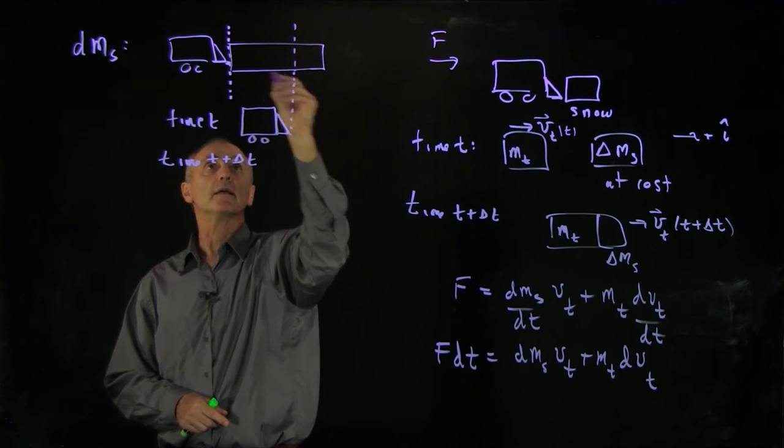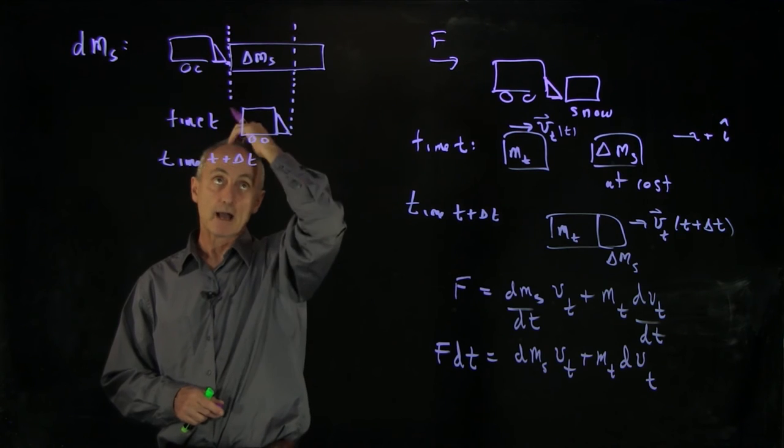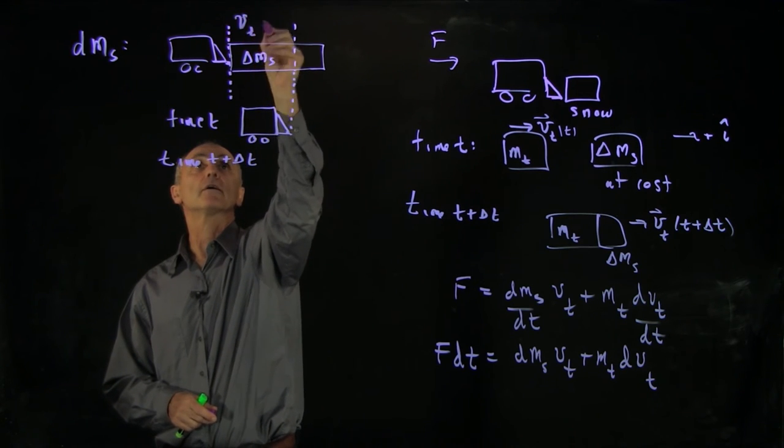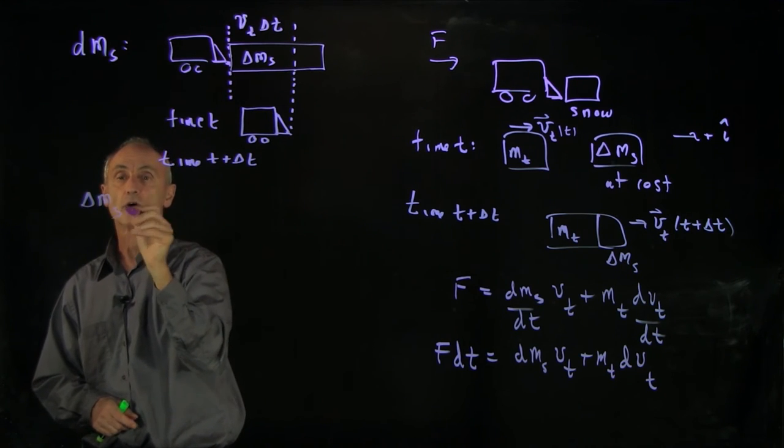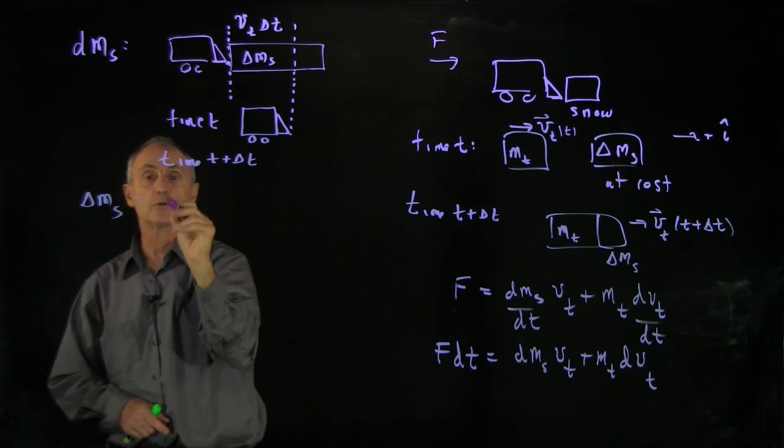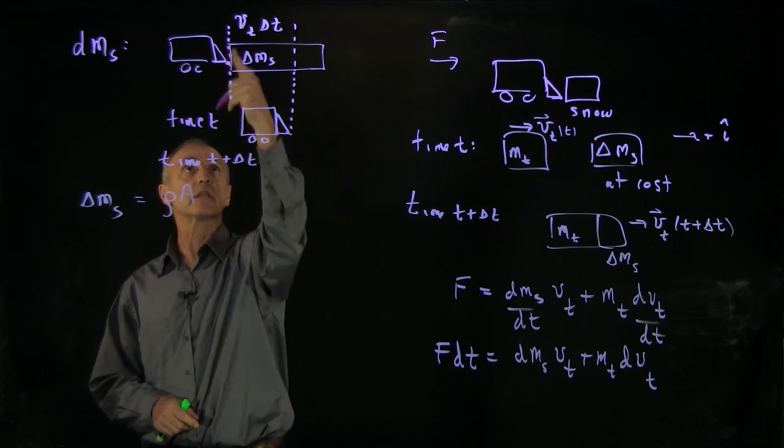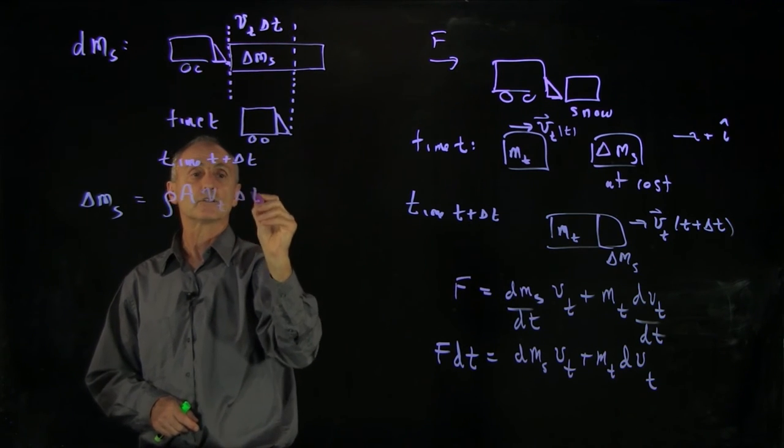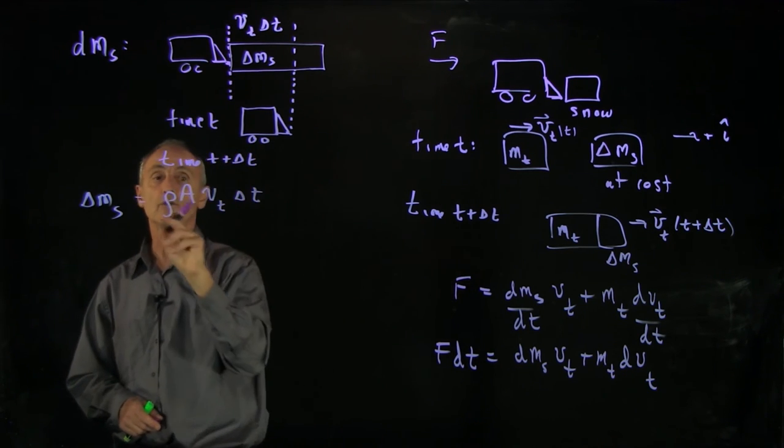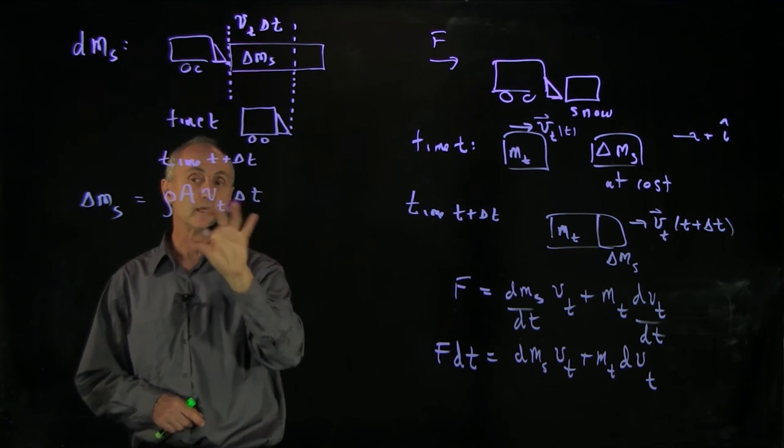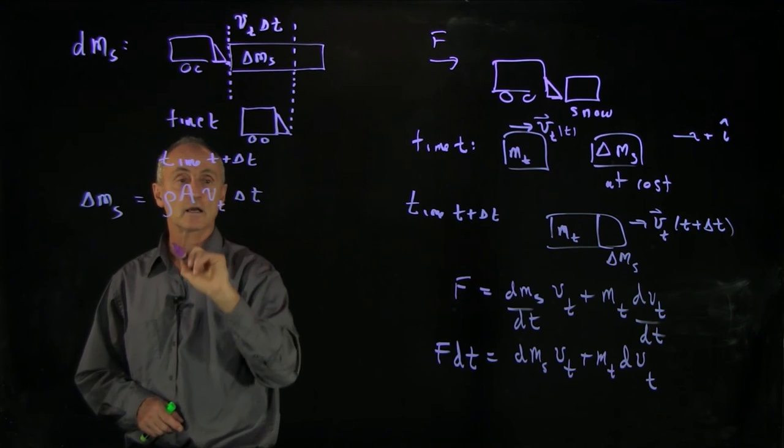And so this quantity is the amount of snow that's picked up by the truck and displaced. Now, the truck has moved a distance v truck delta t. And so we can identify the delta ms, which in the limit will be dms, is equal to the density of snow times a cross-sectional area of the plow times the length v of truck delta t. And so now we have an expression for the rate that the mass is being picked up in this time interval.